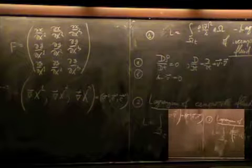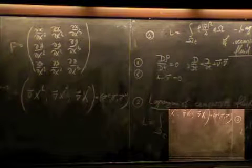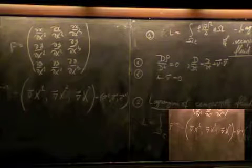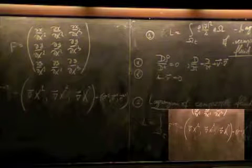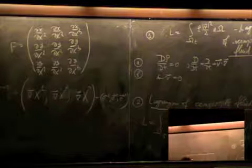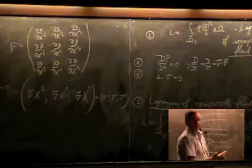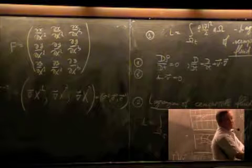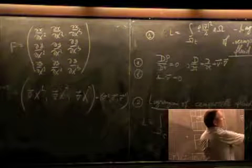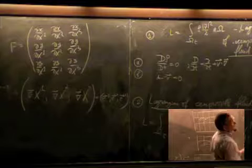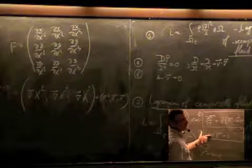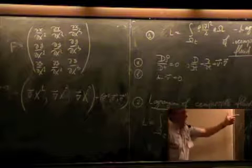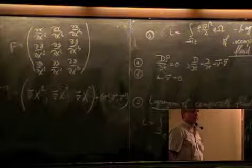So we have a number of variational principles. The problem is how to derive what people call Euler-Lagrange equations for the Lagrangian with constraints. We cannot just write Euler-Lagrange equations in the general case, because we must respect the constraints — conservation of these vectors, curl equal to zero, conservation of mass, and so on. I will show how to do that.